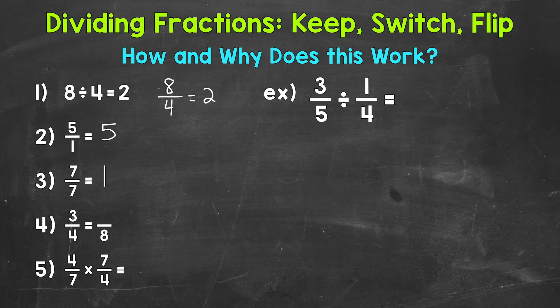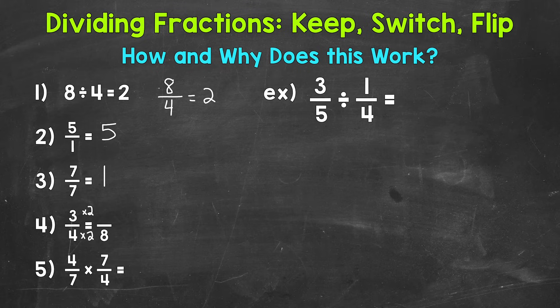The fourth thing we need to understand is equivalent fractions. In order to keep a fraction equivalent, whatever we do to the bottom, we must do to the top, or vice versa — using multiplication or division. For example, 3 fourths equals how many eighths? We know 4 times 2 equals 8, so 3 times 2 gives us 6. So 3 fourths is equivalent to 6 eighths — both fractions have the same value.